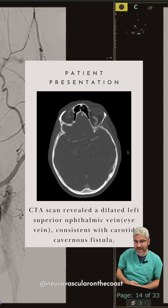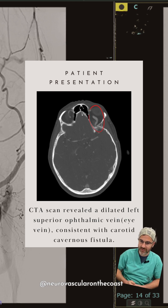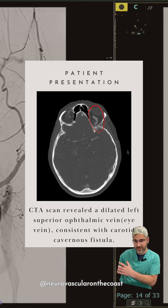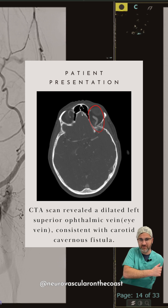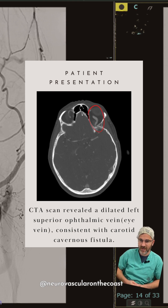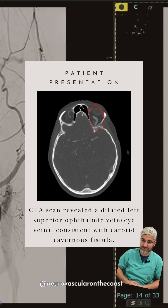On CTA — this is how we diagnosed this patient's carotid cavernous fistula — we have circled here the engorged superior ophthalmic vein, which is being filled with arterial blood because of the fistula. It's taking blood from the arterial side and shunting it to the venous side, and the veins aren't built for that, so they're really enlarged. This superior ophthalmic vein finding is pathognomonic — very diagnostic — for a carotid cavernous fistula.